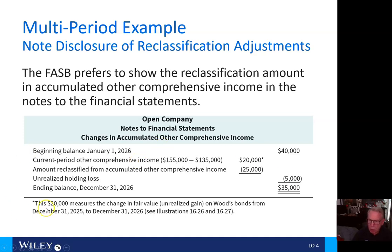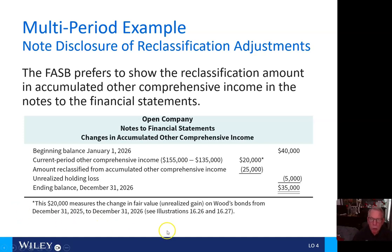The $20,000 in this note measures the change in fair value — the unrealized gain on Wood's bonds from December 31, 2025 to December 31, 2026 — which we had just gone through in illustrations 16.26 and 16.27.